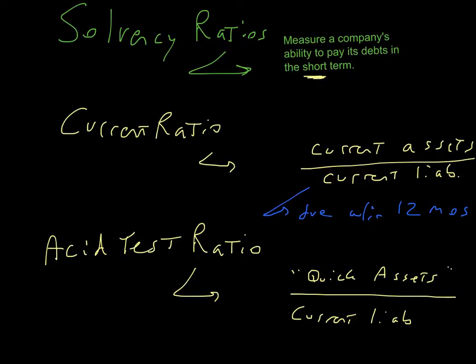Current assets are those assets that we feel will be used up or consumed within the next 12 months. And current assets generally include cash, short term investments, accounts receivable, inventories, and usually there's some prepaid assets in there as well, such as prepaid rent or prepaid insurance.